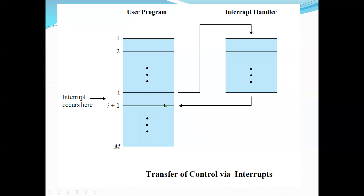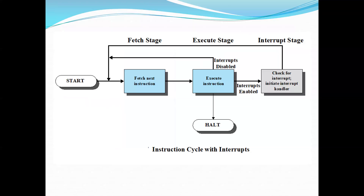For the user program, the interrupt suspends normal sequence of execution, and when the interrupt processing is completed, execution resumes. The user program does not have to contain any special code to accommodate interrupts — the processor and the OS are responsible for suspending the user program and resuming it at the same point.